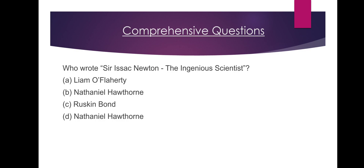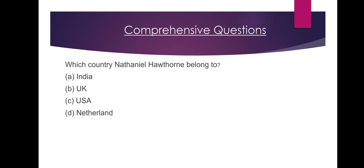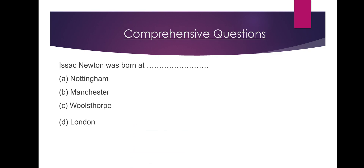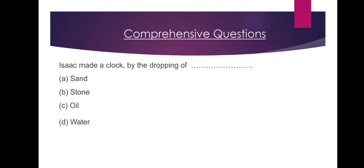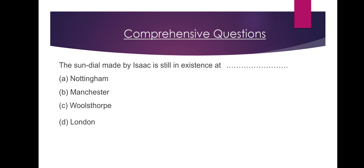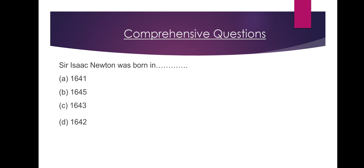Here are comprehensive questions. Who wrote Sir Isaac Newton, the Indigenous Scientist? Newton — Nathaniel Hawthorne. Option B. Which country did Nathaniel Hawthorne belong to — USA? Option C. Isaac Newton was born at Woolsthorpe. Option C — England. Grandmother was advised to apprentice him to a clockmaker. Option B. Isaac made a clock by the dropping of water. Option D. The sundial made by Isaac is still in existence at Woolsthorpe. Option C. Isaac constructed a model of the windmill. Option A. Sir Isaac Newton was born in 1642. Option D. Sir Isaac Newton died at 85 years, in 1727. Option C.